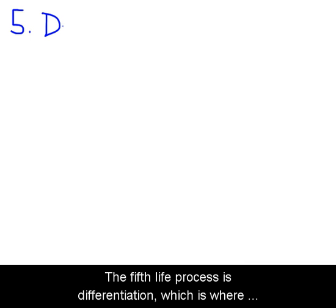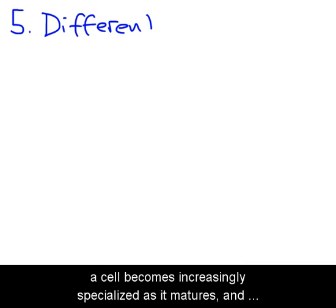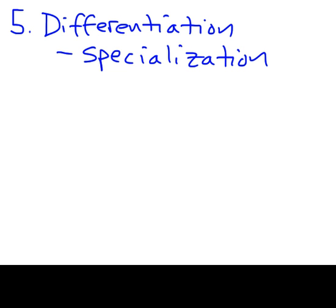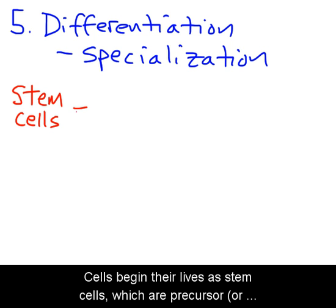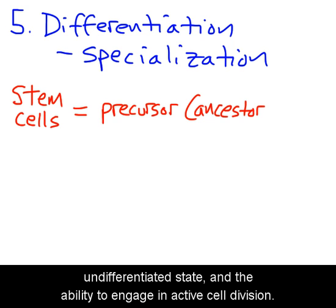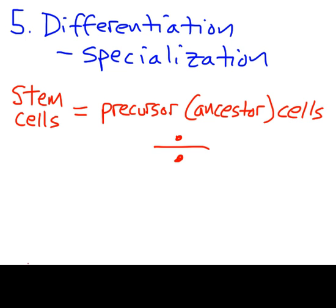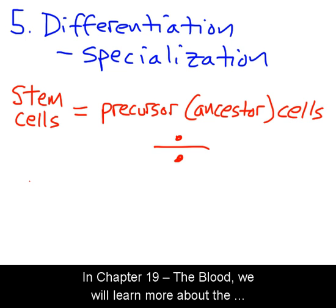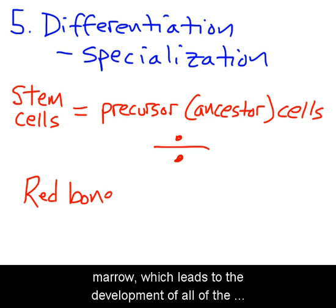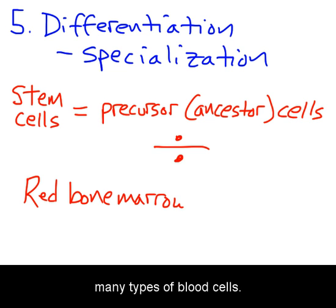The fifth life process is differentiation, which is where a cell becomes increasingly specialized as it matures, and takes on a specific shape, structures, and functions. Cells begin their lives as stem cells, which are precursor, or ancestor cells, characterized by having a general and undifferentiated state, and the ability to engage in active cell division. In Chapter 19, The Blood, we will learn more about the process of differentiation occurring in the red bone marrow, which leads to the development of all of the many types of blood cells.